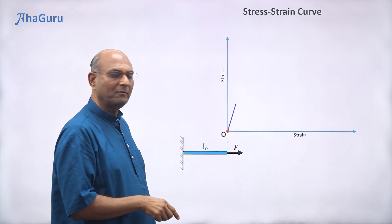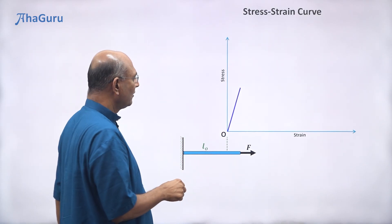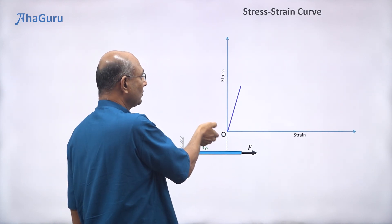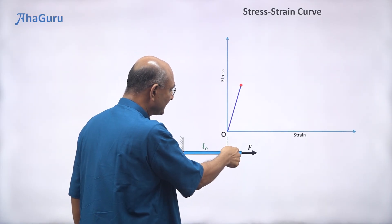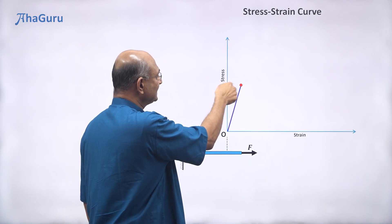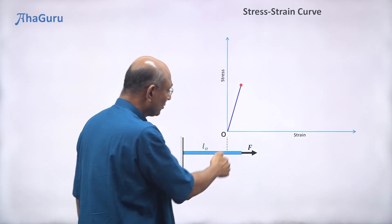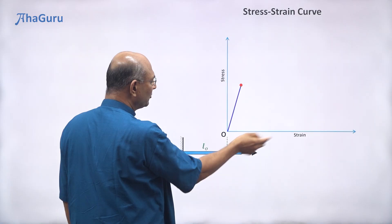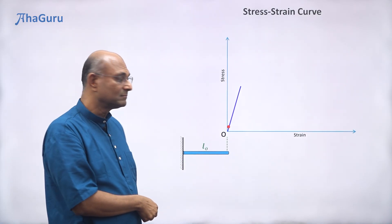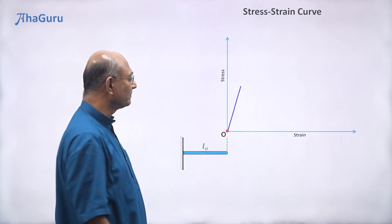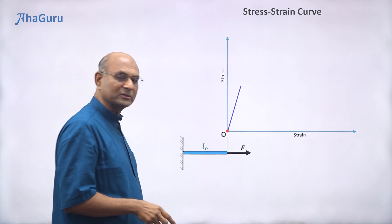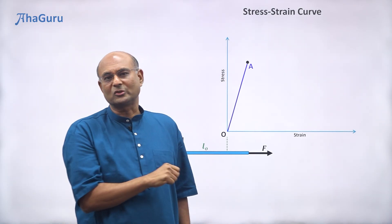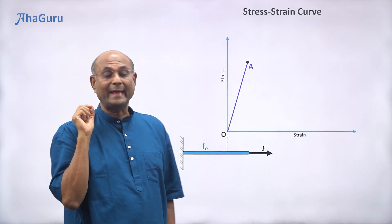If I apply a larger force, the rod extends more, giving larger strain and larger stress — the point moves further up along the straight line. Releasing the force brings it back to L-naught perfectly. Applying an even larger force, the rod extends to the maximum limit of Hooke's law, which I will call point A.